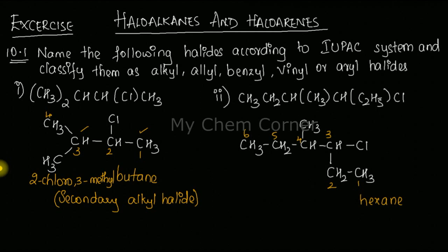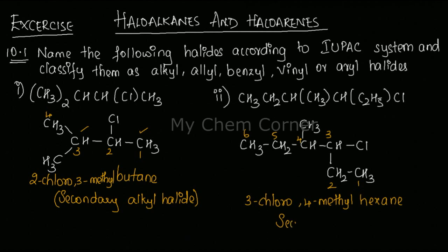Looking at the substituents: on position three we have a chloro group and on position four we have a methyl group. Writing in alphabetical order, the IUPAC name is 3-chloro-4-methylhexane. For classification, the carbon bearing chlorine has an alkyl group on one side and another alkyl group on the other side — two alkyl groups — so this carbon is secondary.